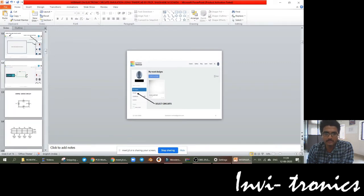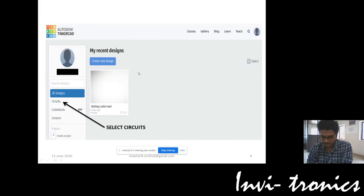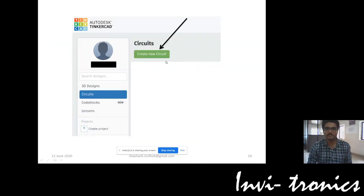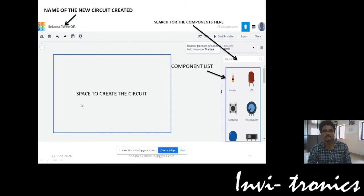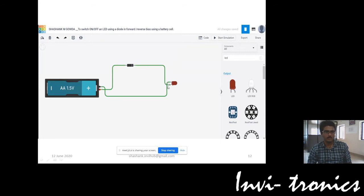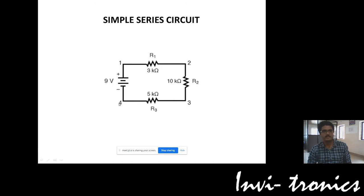I hope everybody is clear with the push-button concept — we will see that very soon. After we have created the circuits in this workspace, we have done a small experiment. We have a simple series circuit, and we will try to understand how this 9-volt battery's voltage is going to be divided — whether the voltage is getting divided, whether the current is getting divided.